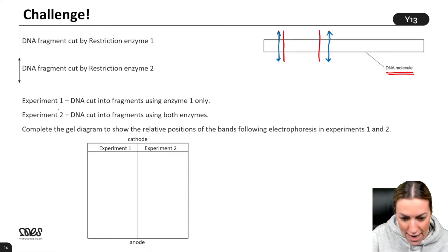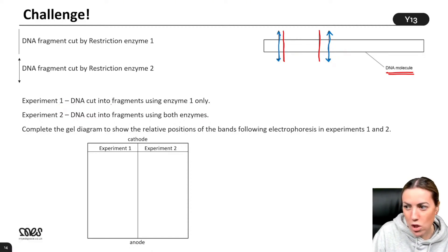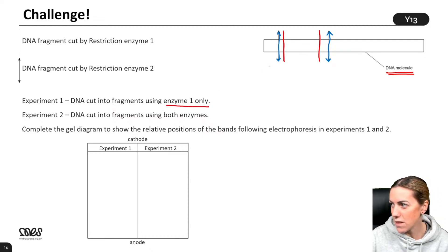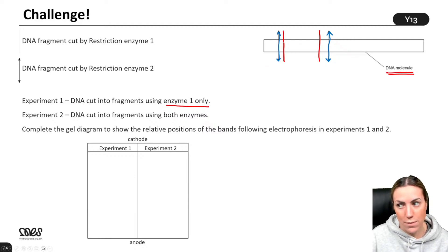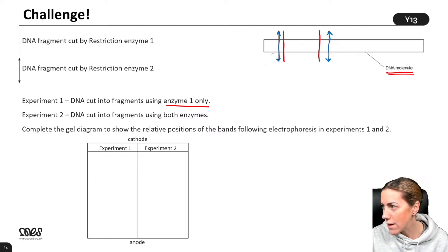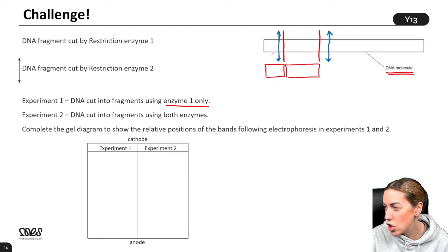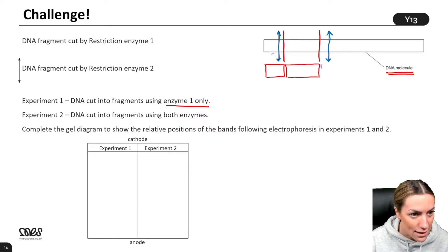They did two different experiments — please do stop me if there's anything you don't understand. In experiment one, the DNA was cut into fragments using only enzyme one. So what I would do in the exam: ignore the blue cuts because in experiment one we're only cutting it with enzyme one. I would draw the length of the fragments that I would have got if I had just cut the DNA with enzyme one.